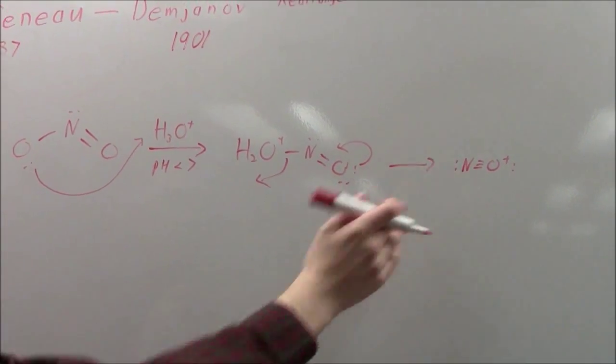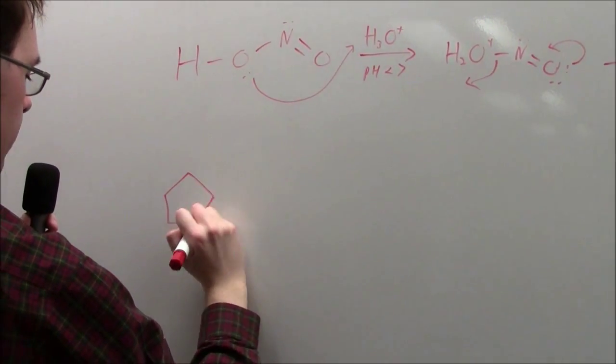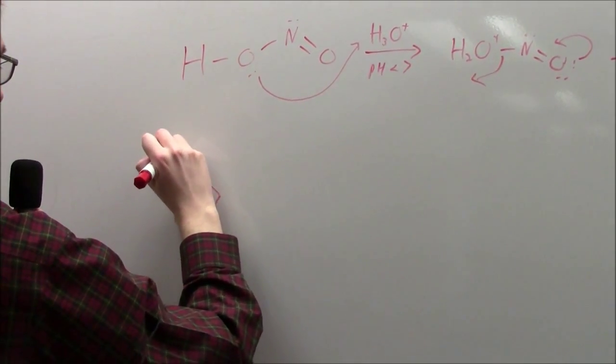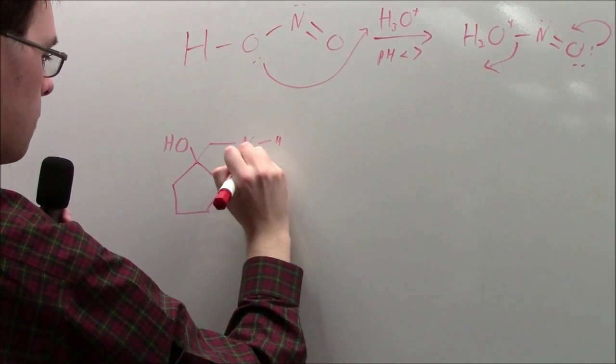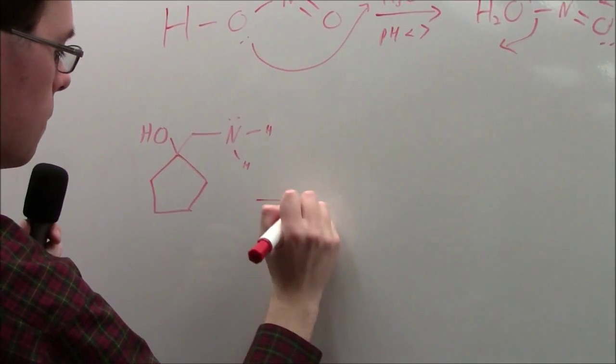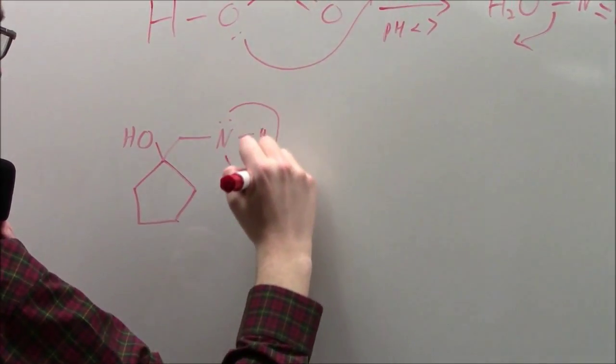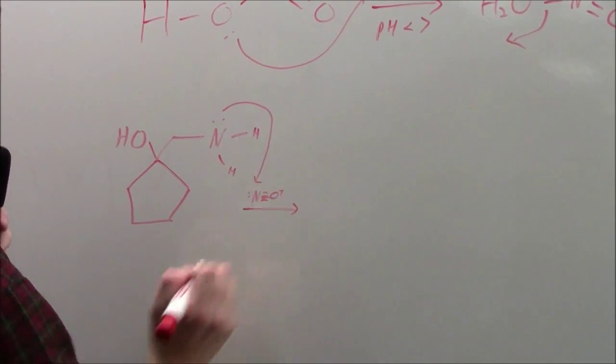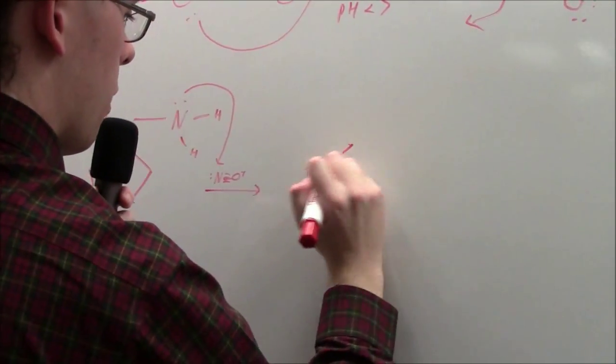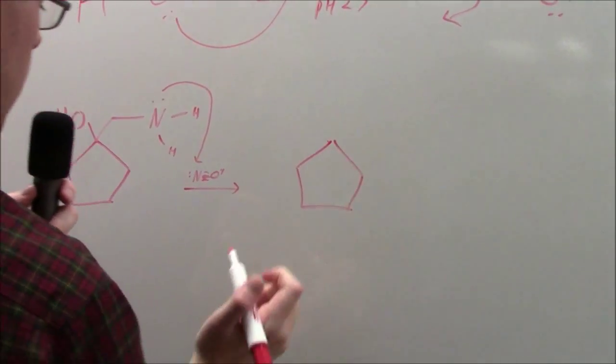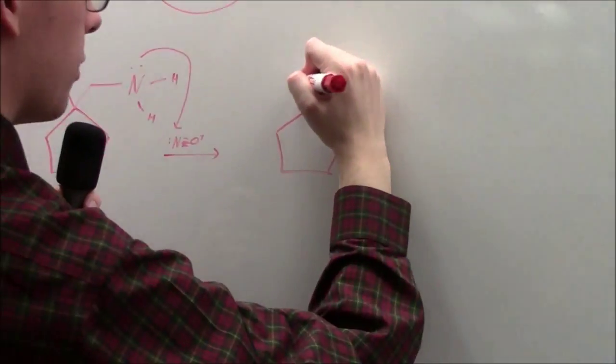This ion can react with our 1-aminomethyl cycloalkanol. The lone pair on the amine group will attack the nitrogen in the nitrosonium ion and begin to form a diazonium group and eliminate the oxygen ion here as water after some rearrangement.